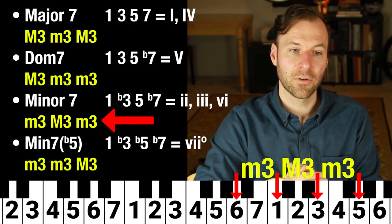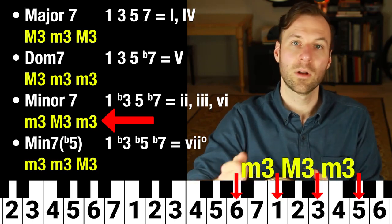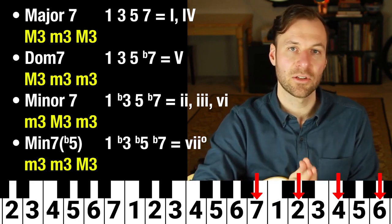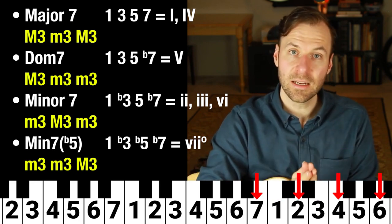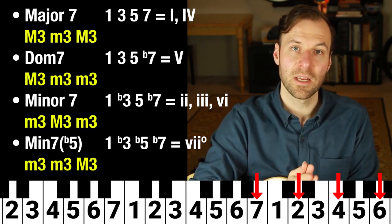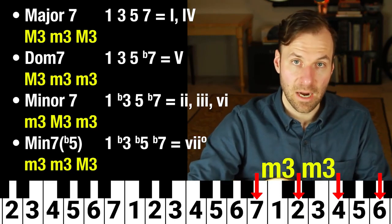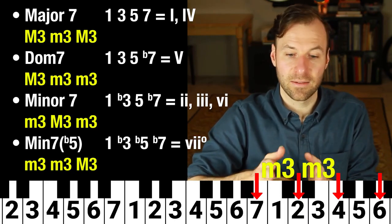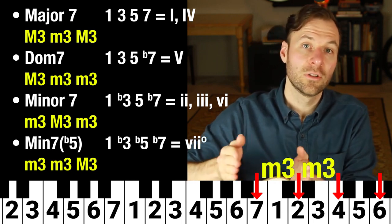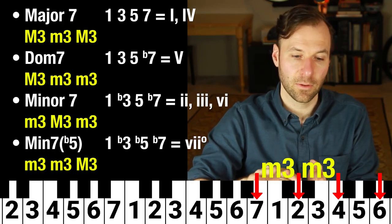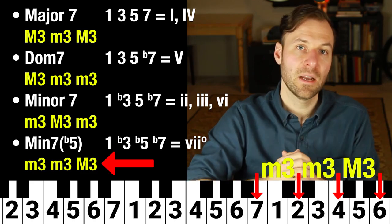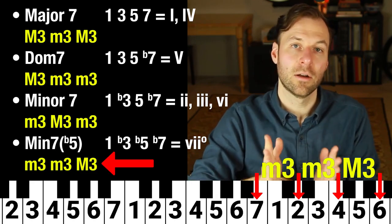For the six chord, it's another minor seven chord: six to one is a minor third, one to three is a major third, three to five is a minor third — minor third, major third, minor third. And lastly, the seventh chord of the key — half diminished — is unique because there are two minor thirds in a row: seven to two is a minor third, two to four is another minor third, forming a diminished triad. Then four to six is a major third. So minor third, minor third, major third: that is the structure of the half diminished chord.